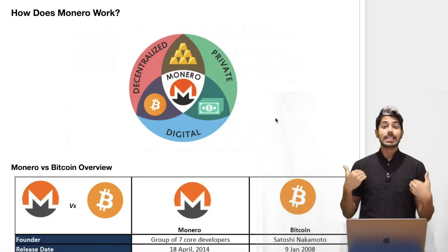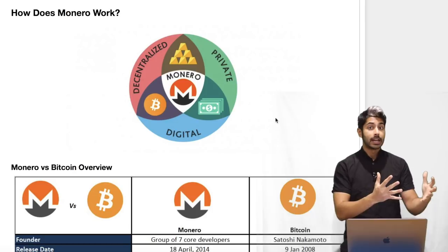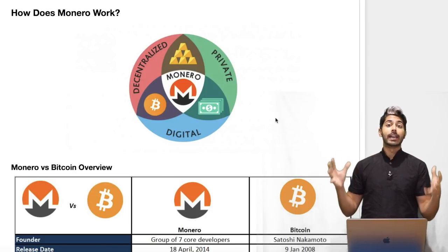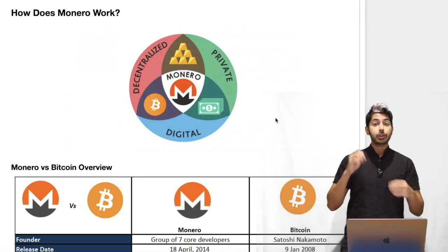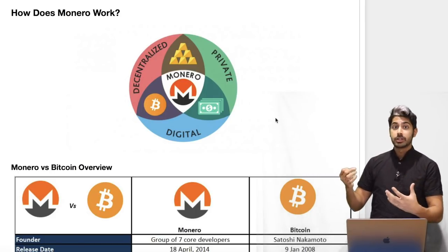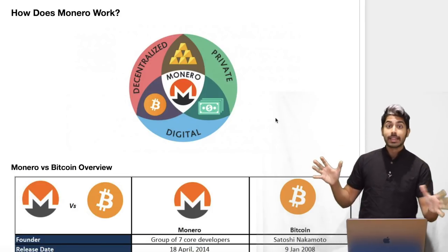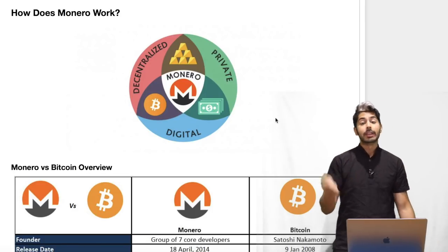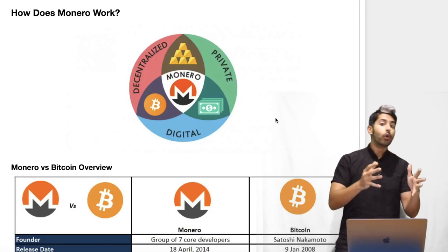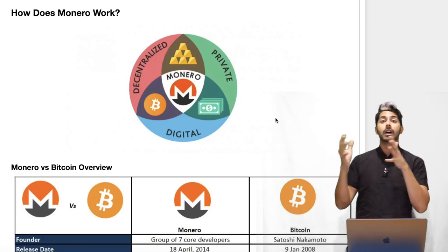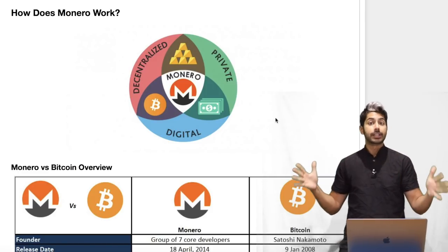The reason I'm talking about it is because you should be able to control your data, and some of your data is transactional data. Currently, companies can mine that data for free and use it to make predictions about what you will and won't buy, so they can show you ads. But ideally they pay you for this data, and the only way for them to pay you is if you control it — and the only way you can control it is if it's anonymous, so they have to ask you for permission to see your transaction history.